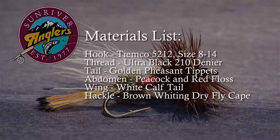For a tail we're going to use golden pheasant tippets. The abdomen is peacock and red floss. The wing is white calf tail and the hackle is a brown whiting dry fly cape.